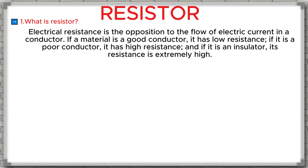First, we need to understand what exactly a resistor is. Here is a simple definition: a resistor is an electronic component whose job is to resist the flow of electric current in a circuit. It can be used to reduce the current, to divide voltage, or to protect other components in the circuit.